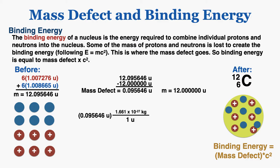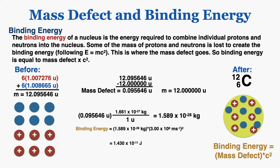To find exactly how much energy this is, I change the mass defect into kilograms to use in E equals mc squared. We usually record binding energy in electron volts or mega electron volts because that's a more manageable number. Converting from joules to electron volts and then to mega electron volts gives a final answer of 89.4 mega electron volts. So these protons and neutrons had to sacrifice exactly enough mass to create 89.4 MeV of binding energy to hold them together in the nucleus.